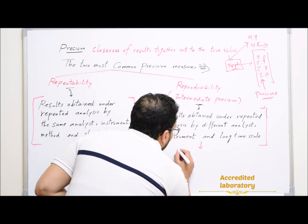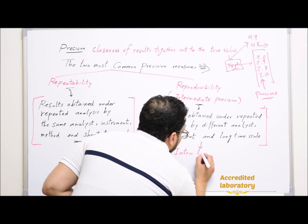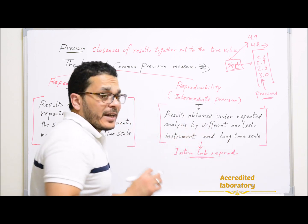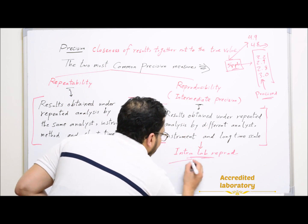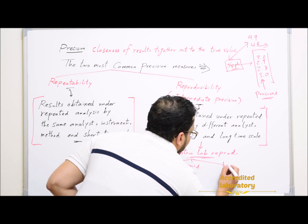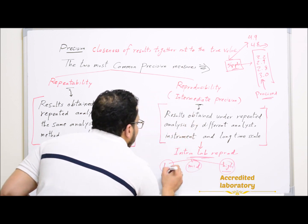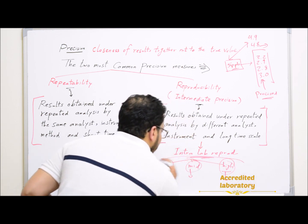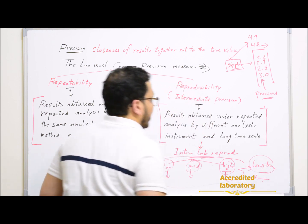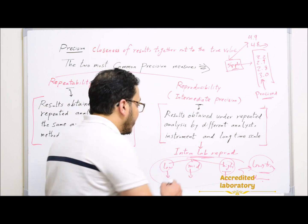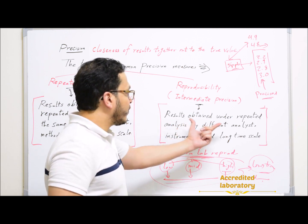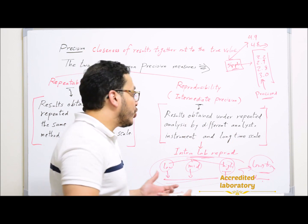In this case, you can do intra-lab reproducibility. You will make replicate analysis but at different levels — you will select three different levels: low level, mid level, and high level — and make replicate analyses from each one. These levels will be done on a long time scale. Similarly, you can also use a different analyst with the same instrument, but select different levels. This is how to achieve this performance parameter if you cannot change analysts or instruments.